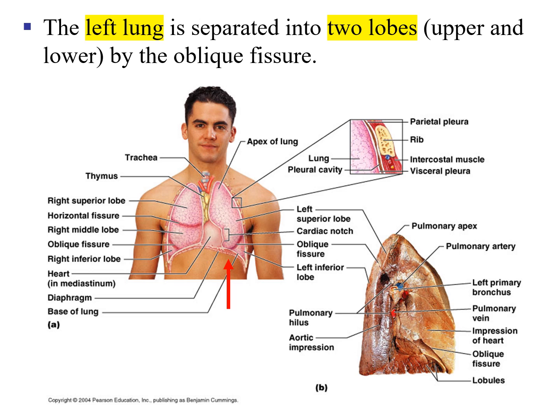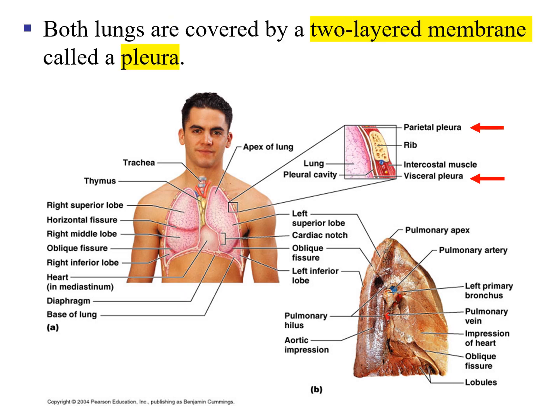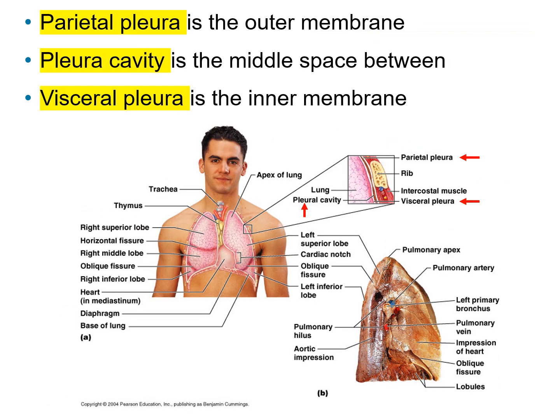The left lung is separated into two lobes — upper and lower — separated by the oblique fissure. The right lung is separated into three lobes by two fissures: the oblique fissure and the horizontal fissure. Collectively, there are five lobes of the lung. Both lungs are covered by a two-layered membrane called the pleura: the outermost is the parietal pleura and the innermost is the visceral pleura. The space between them is the pleural cavity.